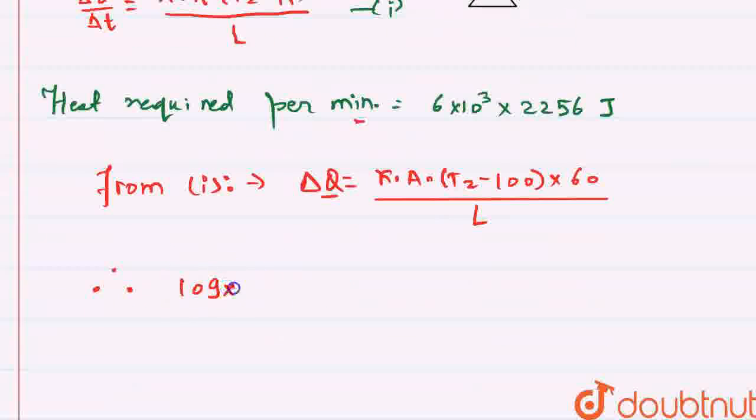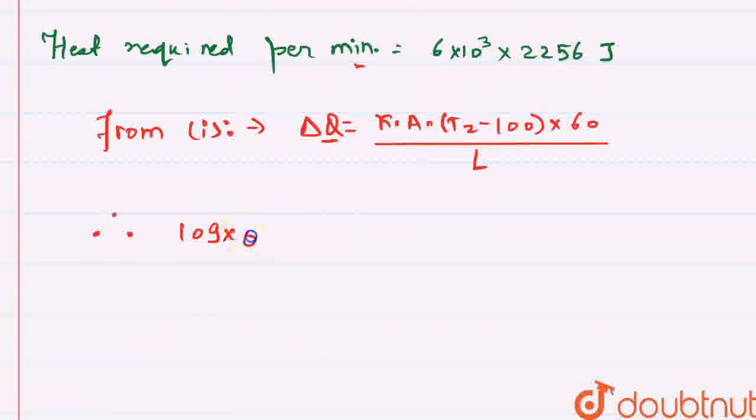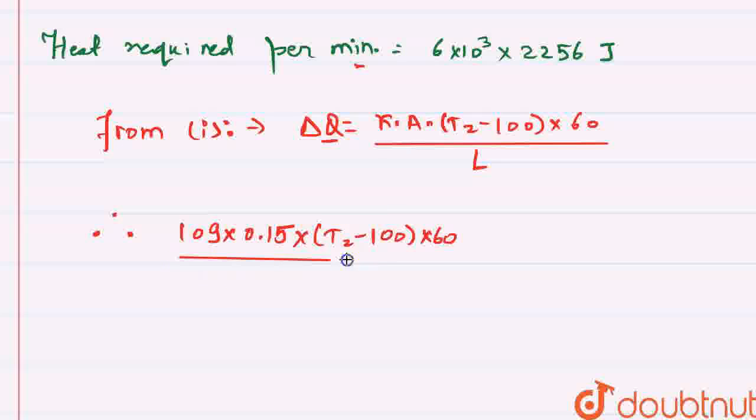109 into area was 0.15 meter square, 0.15 meter square into T2 minus 100 into 60, and that whole will be divided with the length of the conductor, that is 10 to the power minus 2. And we'll equate this delta Q with heat required per minute, that is 6 into 2256 into 10 to the power 3.